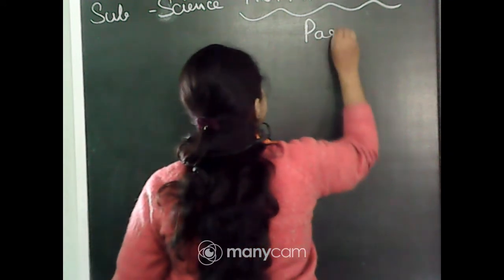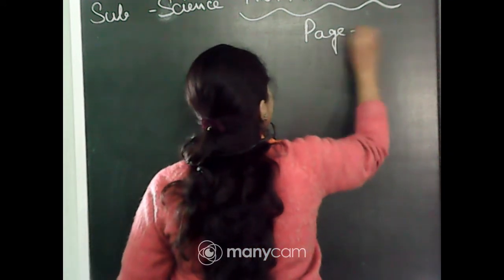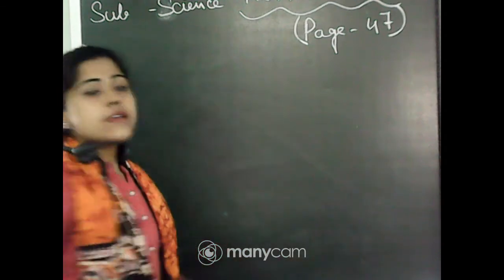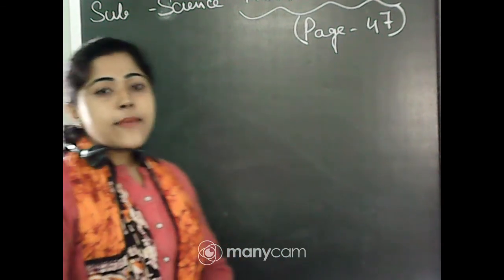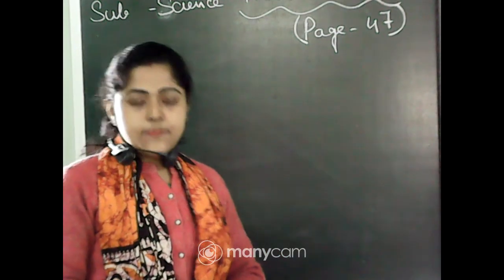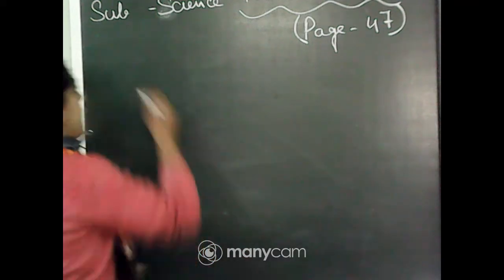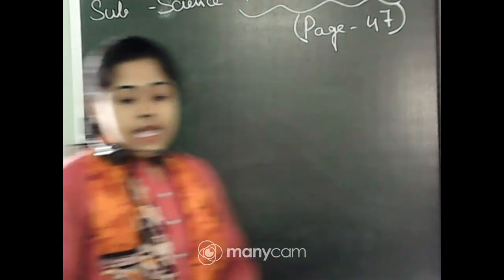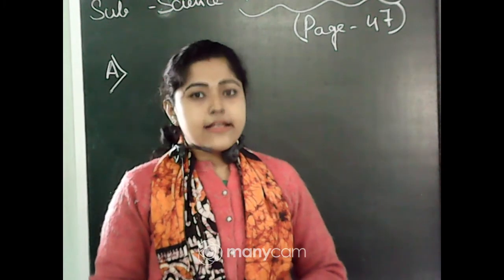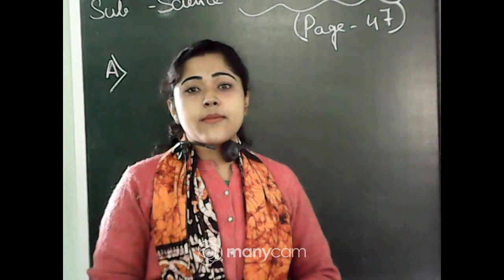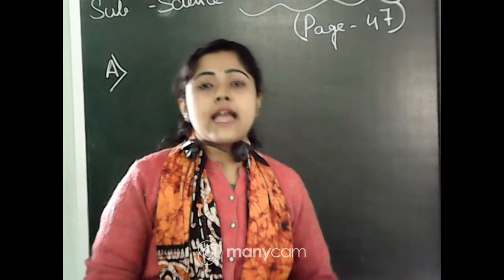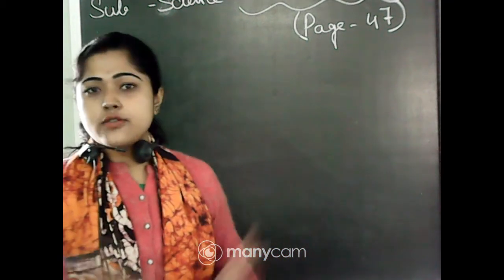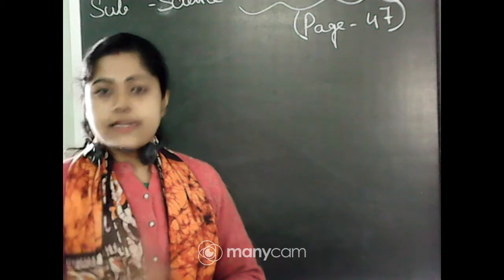Page number 47. So everyone open your book, take your copy book with you, page number 47. The first one is Question A — 'Tick the correct answer.' Here are some questions and according to the questions you will get three options. You have to choose the correct one and tick it.